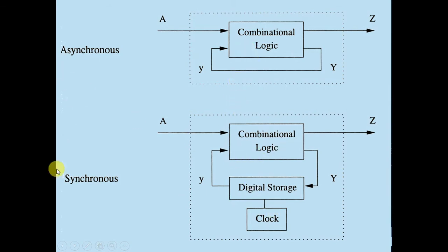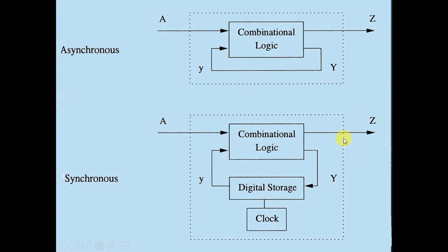Let's take a comparison between both sequential circuits. In the synchronous one, you have combinational logic with input and output, where the outputs are fed back to digital storage — flip-flops driven by the clock. These outputs are the next states; when passed through a flip-flop they become the present states, which are then fed back to the combinational logic. This allows you to determine the state of the circuit at each clock pulse and predict the next state.